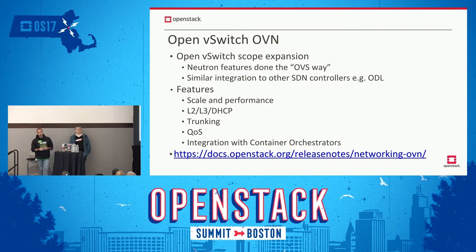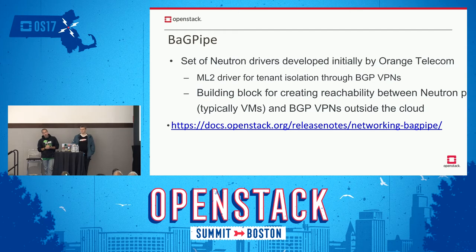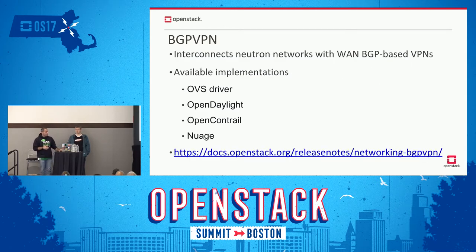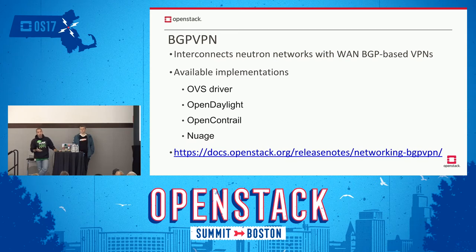OVN also integrates with various container orchestrators like Kubernetes or Docker. Backpipe was an initiative started by Orange Telecom, and is effectively a way to provide tenant isolation by means of BGP VPNs. The BGP VPN project uses Backpipe to interconnect Neutron networks via BGP-based VPNs. It also implements a plugin-based model where different backends can implement the API, and we have implementations available for OpenDaylight, OpenContrail, and Nuage.